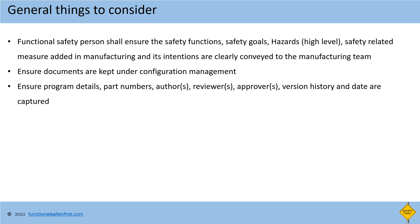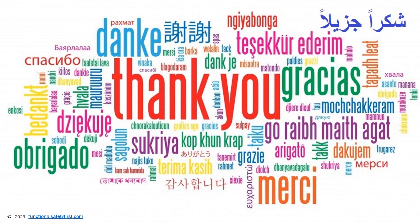Finally, there are some general things to be considered. The functional safety responsible person needs to ensure the safety related functions, safety goals with hazards, and safety related measures added in manufacturing and their intentions are clearly explained to the manufacturing team for better understanding. Ensure all manufacturing related documents are kept under configuration management, and ensure program details, part numbers, details about the authors, reviewers and approvers, version history and dates are captured in all documents. We hope this series of functional safety in automotive ECU manufacturing videos provides information about manufacturing and functional safety related expectations. Stay tuned and contact us at autofunctionalsafety@gmail.com if you have any questions. Thank you for watching.